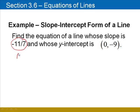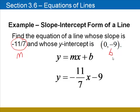Negative 11 sevenths is our value of m, and the y-intercept was (0, negative 9), so negative 9 will be our value of b. We'll substitute negative 11 sevenths in for m and negative 9 for b, and there's our equation of the line.